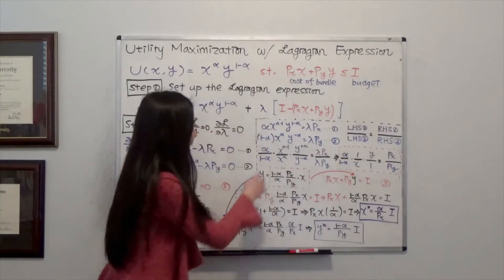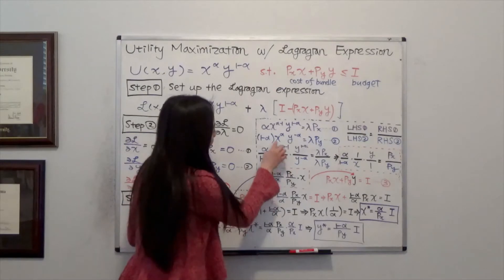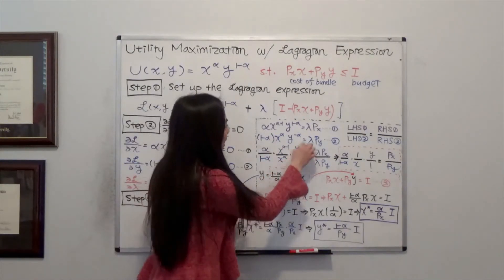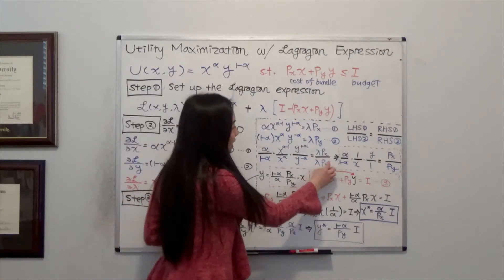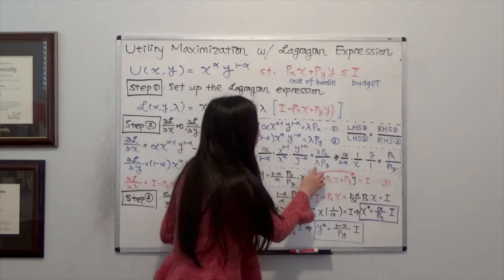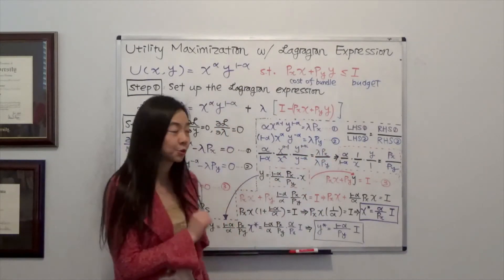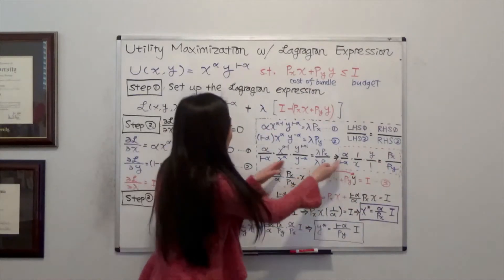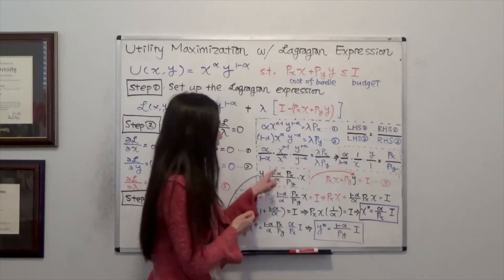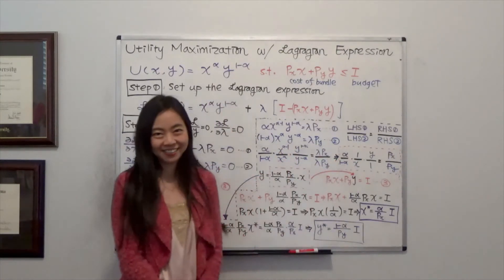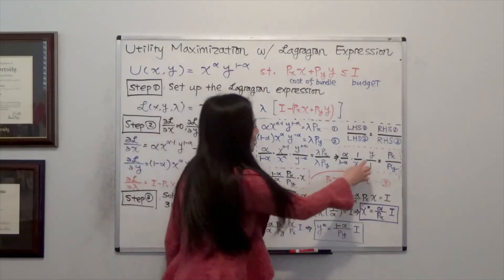After that, I have alpha divided by 1 minus alpha, times x to the power of alpha minus 1 divided by x to the power of alpha, times y to the power of 1 minus alpha divided by y to the power of negative alpha, equal to lambda·p_x divided by lambda·p_y. On the right-hand side, the lambdas cancel, leaving p_x over p_y. On the left-hand side, x to the alpha minus 1 over x to the alpha simplifies to 1 over x, and y to the 1 minus alpha over y to the negative alpha simplifies to y.